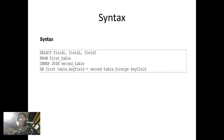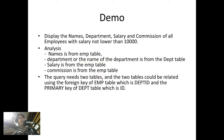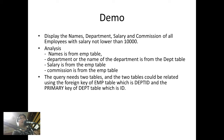Let's demonstrate this. Here we have a demo to display the names, department, salary, and commission of all employees with salary not lower than 10,000. In our analysis, the name of the employee will be coming from the M table, the department name will be from the depth table, and salary and commission are again from the M table. The two tables can be related using the foreign key depth ID of the M table with the primary key ID of the depth table.